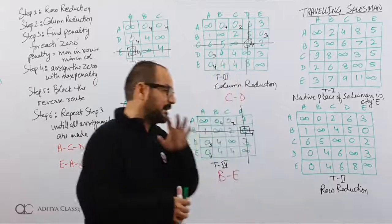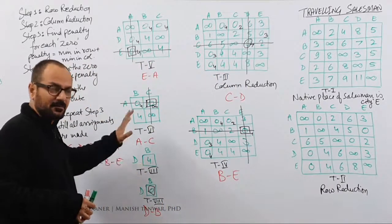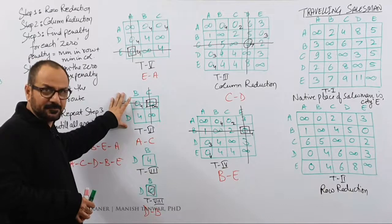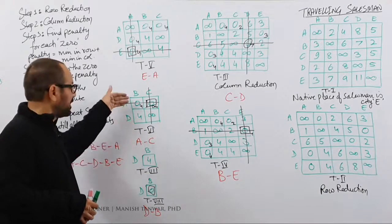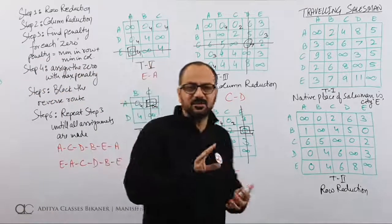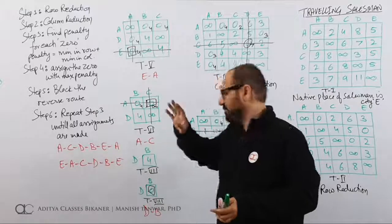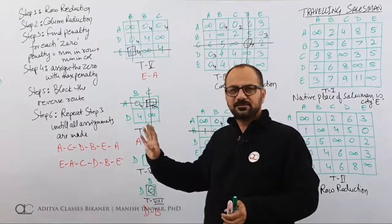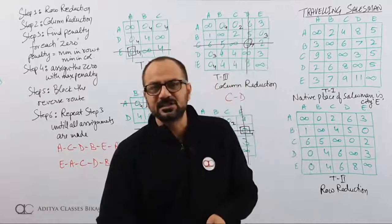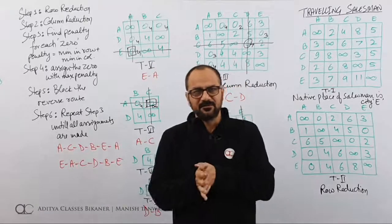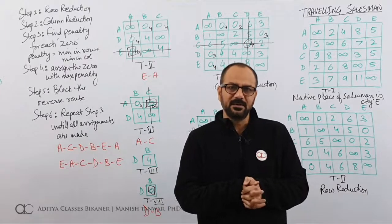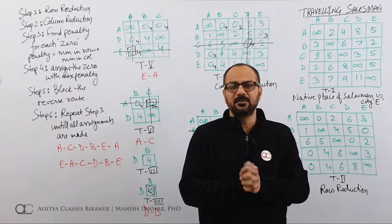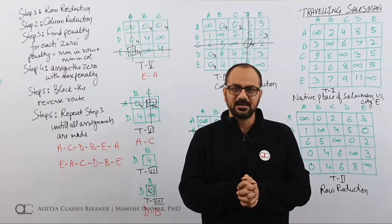If all your zeros are exhausted, go for row reduction and column reduction at that stage. Zeros could be exhausted because we are removing rows and columns. If it so happens, row reduce and column reduce. If you are facing any confusion or doubt in Travelling Salesman, leave it in the comments and we can solve it together. So this was it about Travelling Salesman. Next time we will take up a new topic. Thanks for watching. Bye bye.